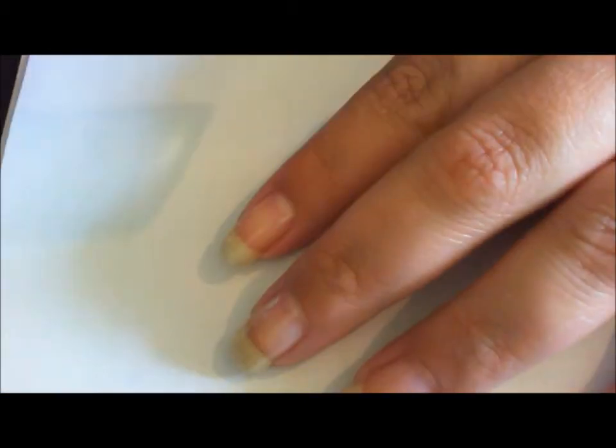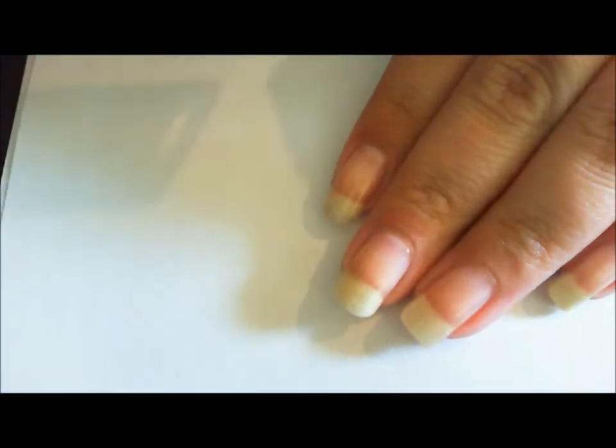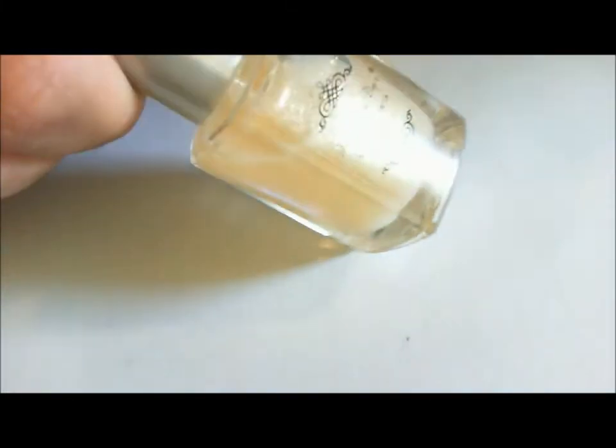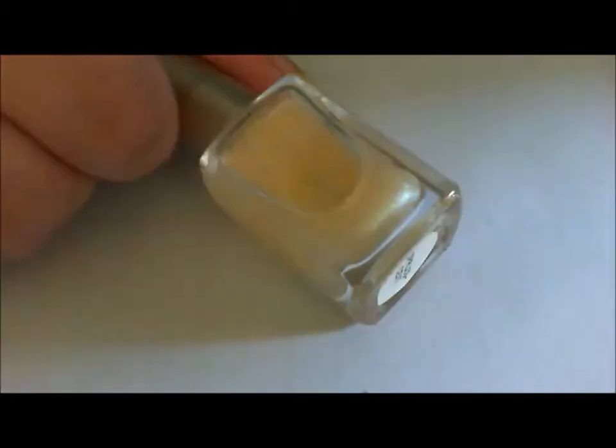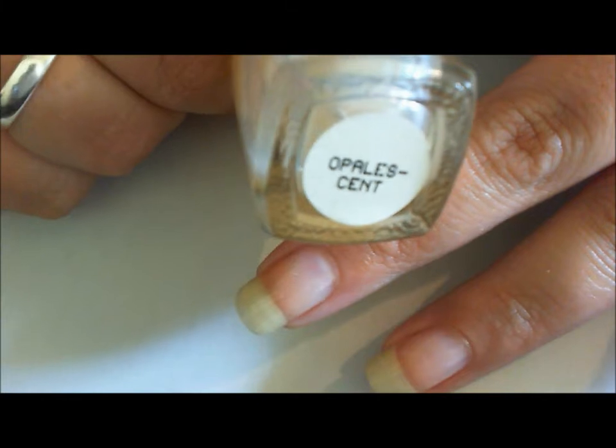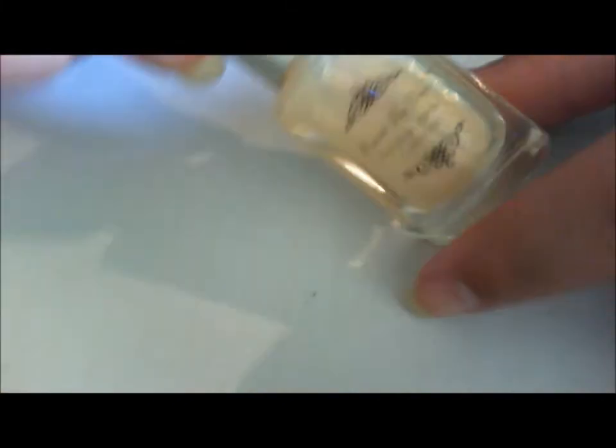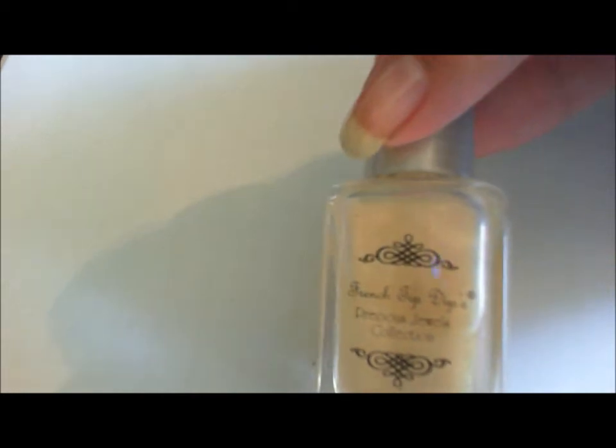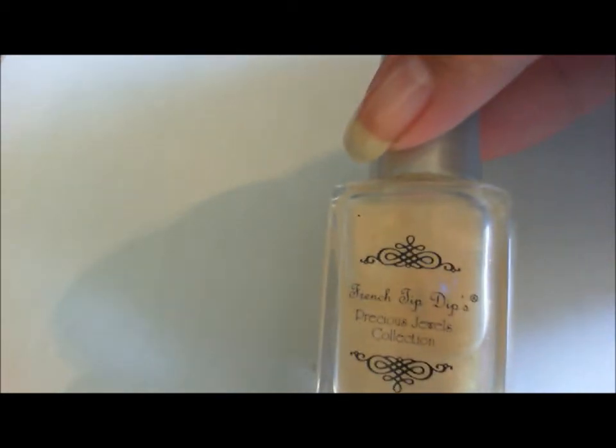Now I'm going to be applying one to two coats. I might go with two depending on how it looks. I'm kind of on the fence of whether I want two coats or not, but anyways, this is called Opalescent by French Tip Dip and it's a really pretty kind of sheer coat.